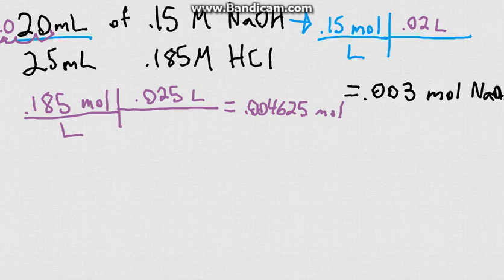So which one do we have more of? It looks like we have more hydrochloric. So then what we want to do is figure out, remember for each one mole of sodium hydroxide we neutralize one mole of hydrochloric. So we can essentially just subtract these two from each other. So minus this 0.003.